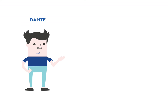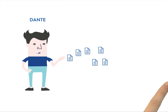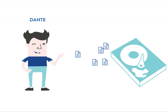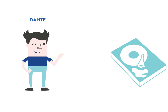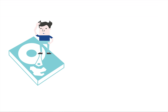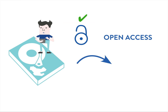This is Dante. Dante is the project leader of a publicly funded project. During the three years of his project, he accumulated a large amount of data in various formats, which are all neatly structured and saved on a storage disk. Before moving on to his next exciting project, Dante wants to make sure others can access and reuse the data he put so much effort in creating.